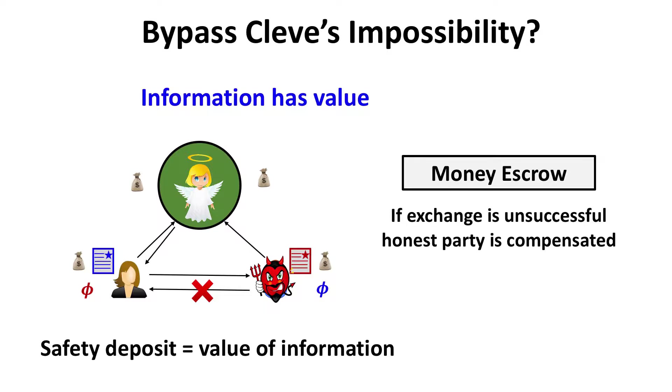We need some way to bypass Cleve's impossibility result, so we're going to change the model slightly. The basic intuition is that information has value and some of this value can be captured by money. Instead of an information escrow, we use a money escrow. Parties deposit their money with the money escrow, then start the exchange. If the exchange goes bad, the money escrow intervenes and compensates the honest party. If you set the safety deposit equal to the value of the information, this gives a reasonable notion of contract implementation.